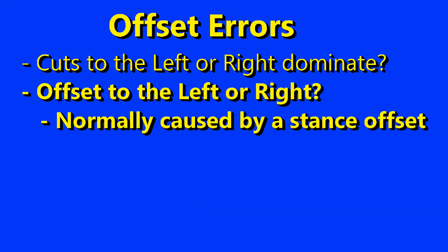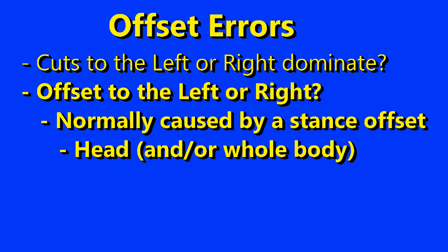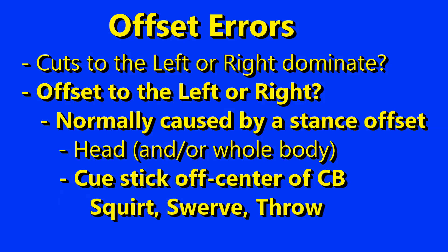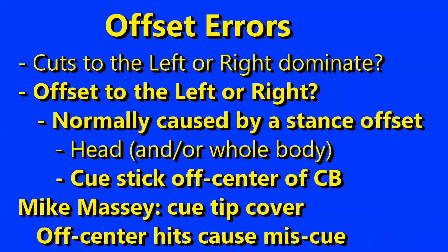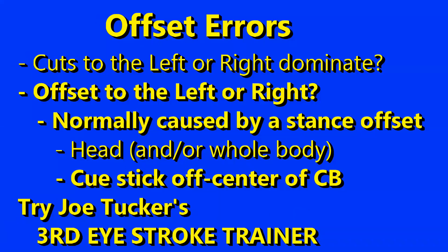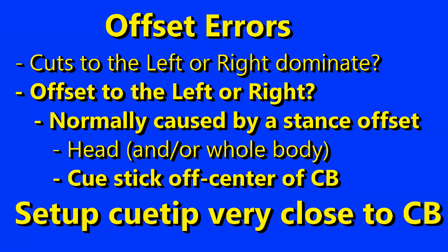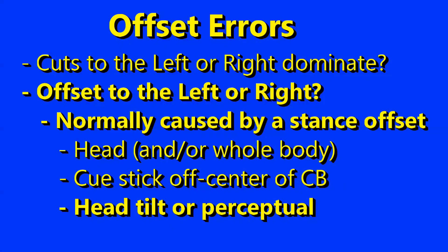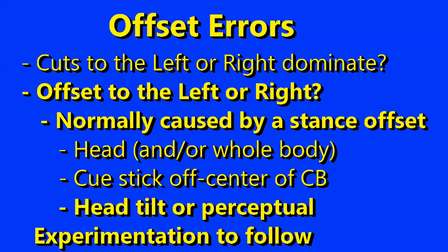In real pool, the first suggestion for such a flaw is that the player is offset to the left or right — either entirely or perhaps the cue stick in relation to the cue ball. An off-center strike on the cue ball creates squirt, swerve, and unexpected throw and unexpected misses. Do the stripe-without-wobble check. Mike Massey has a cue tip cover that identifies every off-center hit by causing a miscue. And the Third Eye Trainer can help you identify center ball before the hit and retrain your perception. But in the Angles Challenge game, the cue stick is perfectly aligned to the center of the cue ball, so my problem might be head tilt or perceptual. Head tilt can be experimented with and the brain can be trained.